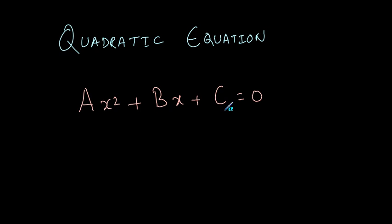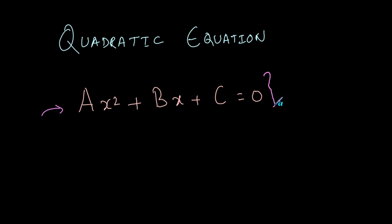In this video, we are going to see a formula for calculating the roots of a quadratic equation. A quadratic equation is an equation of this form: ax squared plus bx plus c is equal to 0. For example, you could have a quadratic equation like x squared plus 2x minus 3 is equal to 0.